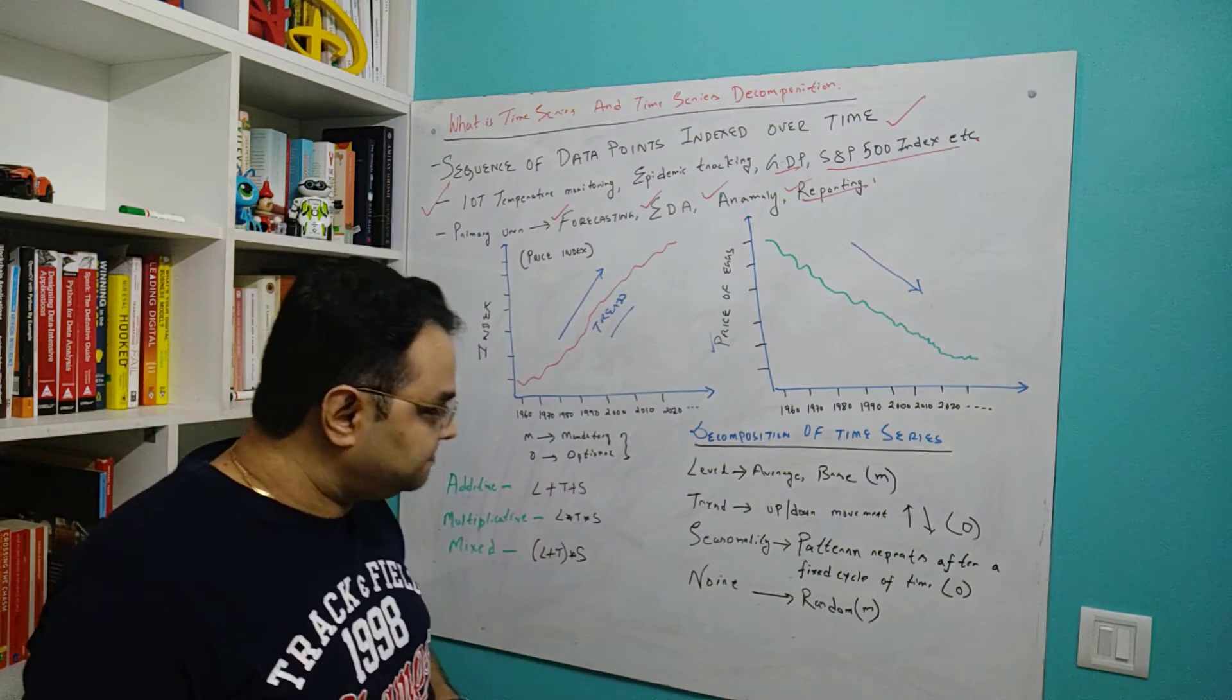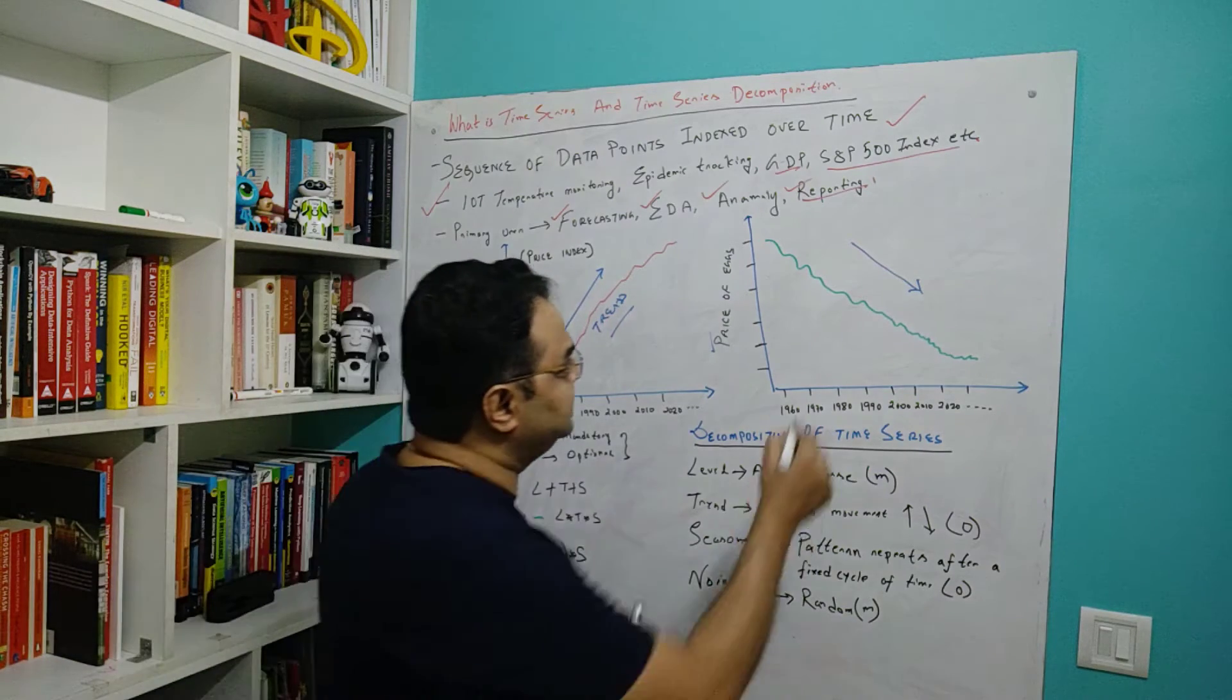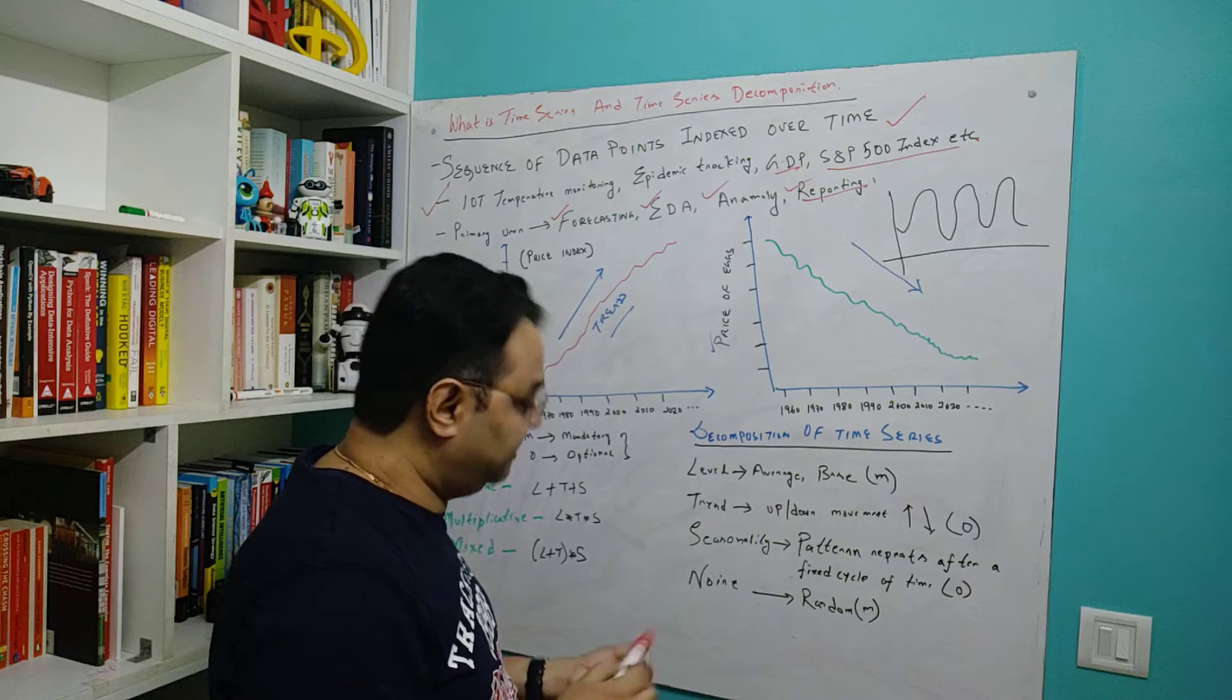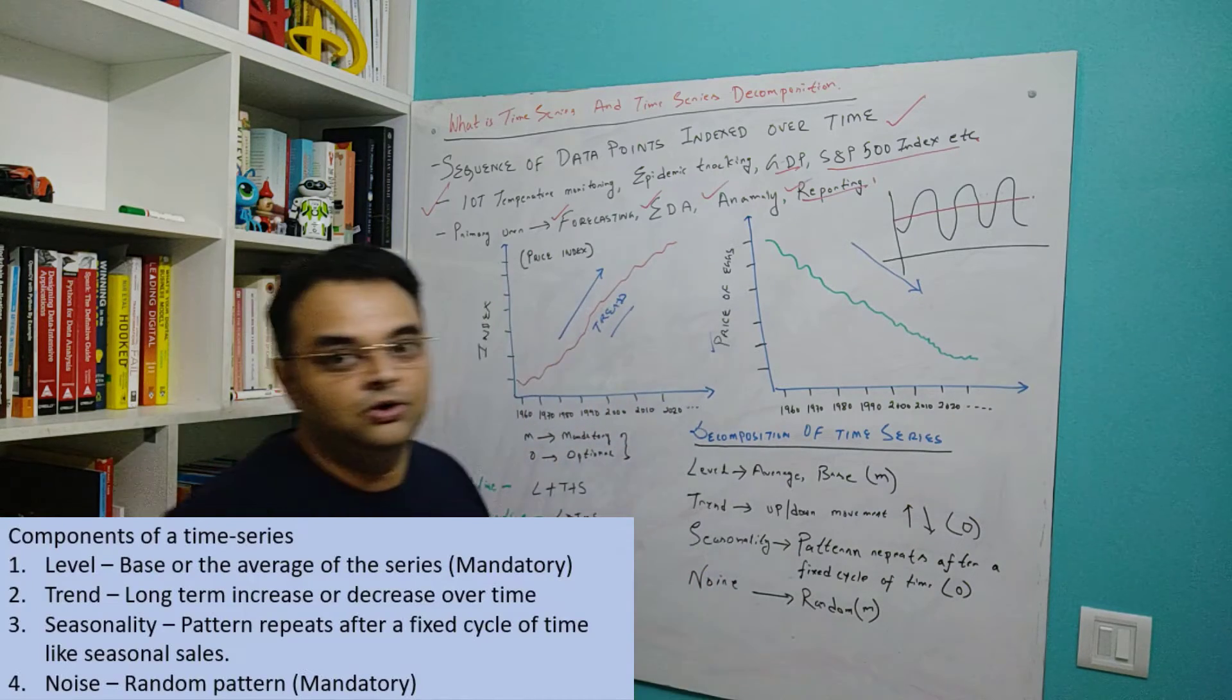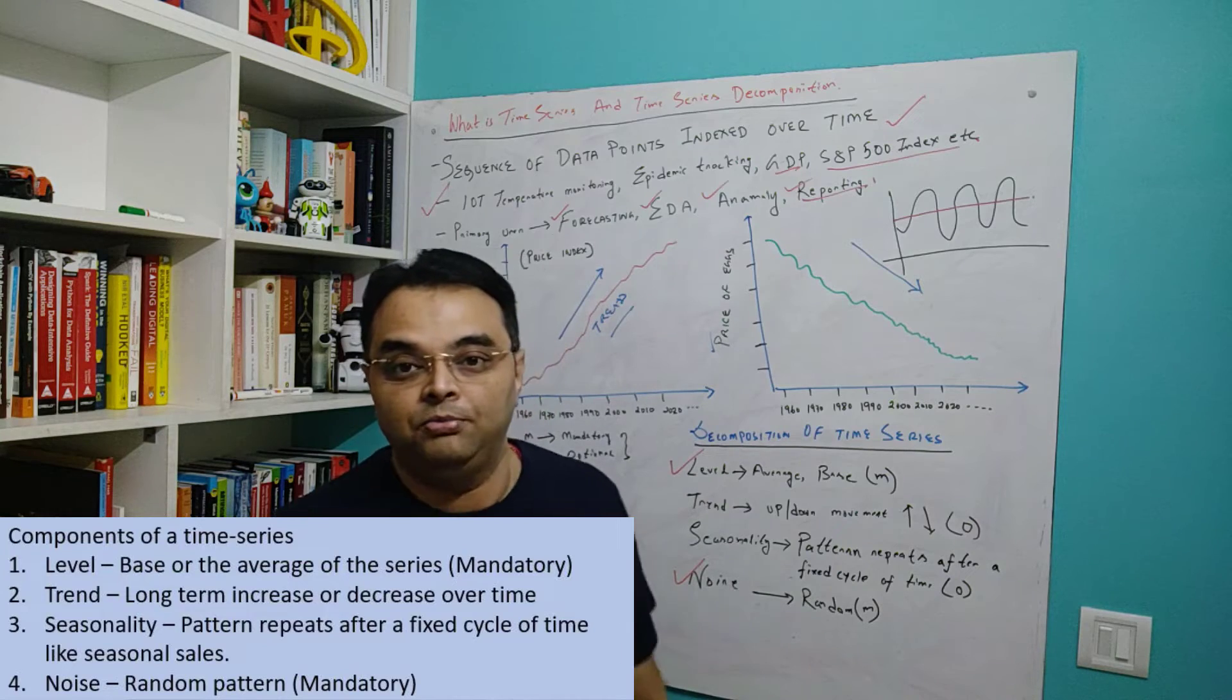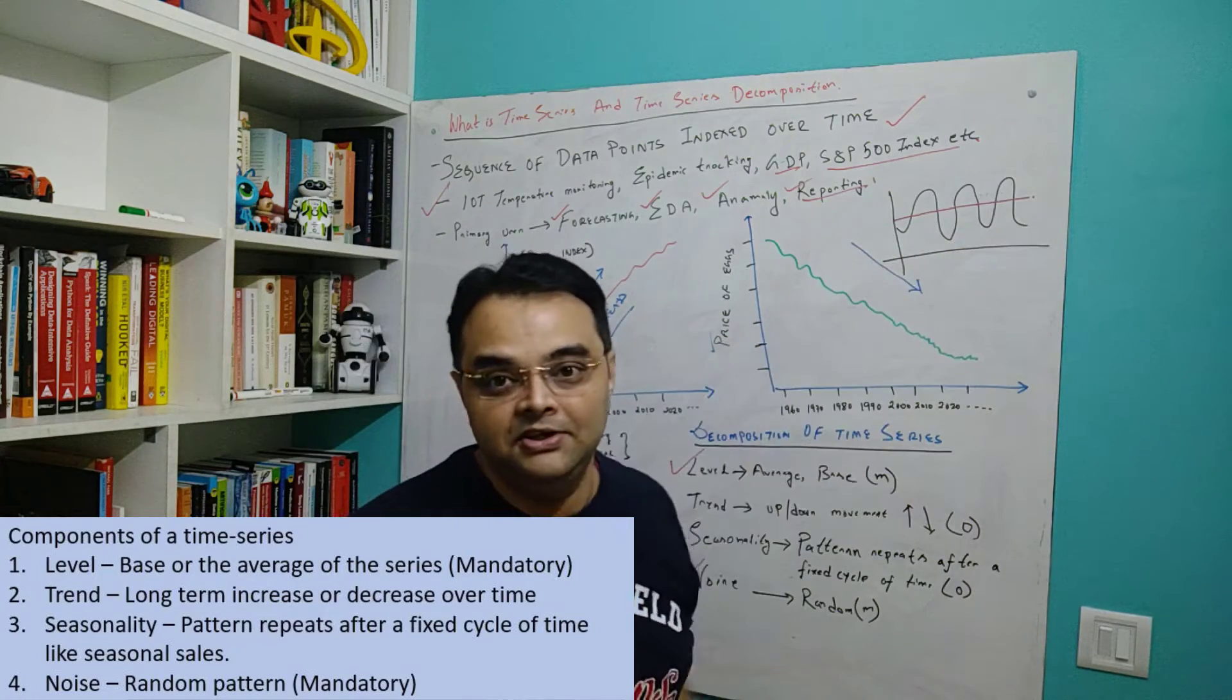There are four things in terms of decomposition of a time series. The first is level. Level is nothing but the base or the average that you have for a time series. If a time series is going over a period of time like this, your level is the average of all the points, so your level is probably here. Please note that all the time series in the world have two things mandatory: one is level and one is noise. Level is an average because all numbers will have an average, and that's the reason you can plot an average.